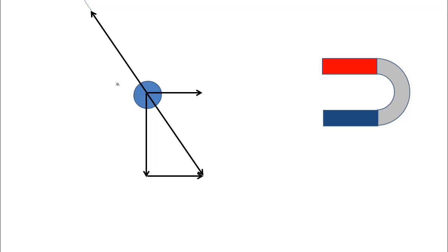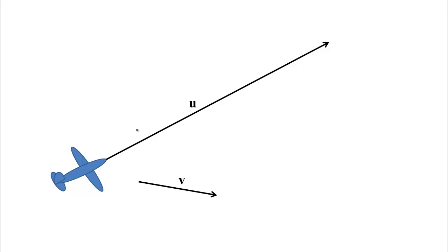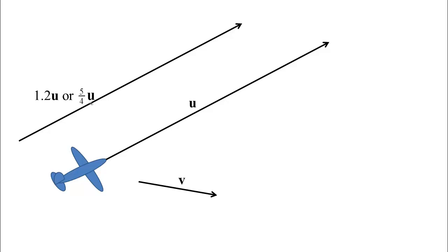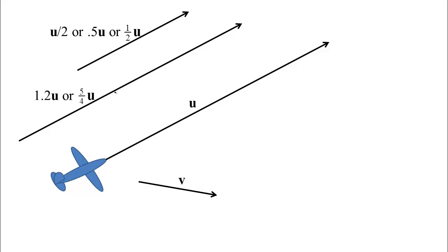Vectors — arrows without a particular starting point, just a direction and a magnitude — can be added by putting them head to tail. They can also be stretched by multiplying by a scale factor. Going back to the airplane example, if the airplane was going 20% faster we'd get an arrow in the same direction but 20% longer, represented by 1.2 times the vector, or say 5/4 times the vector. Multiplying by a number greater than 1 makes the vector longer; multiplying by a number between 0 and 1 makes it shorter. For example, 0.5u is a vector half as long as the original. So if v was our wind speed and the wind blows twice as hard, we get 2v; if it blows only 30% as hard, we get 0.3v.